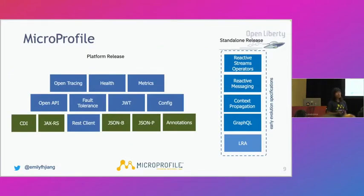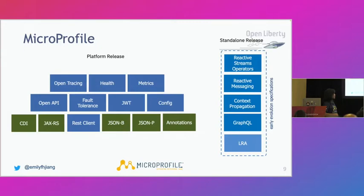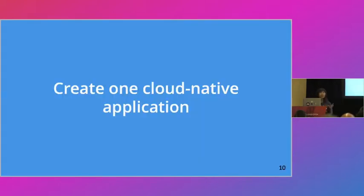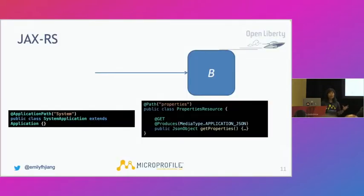In MicroProfile there are two kinds of releases: the platform release with 13 pillars, and standalone releases. The standalone releases include APIs for reactive microservices, synchronous programming, GraphQL as a REST alternative, and microservice transactions with long-running actions. I'll talk about these 13 pillars through a scenario — how to create cloud native applications. As you know, REST is very popular, so MicroProfile has a solution for it using JAX-RS to create endpoint-based applications such as slash-system and slash-properties.